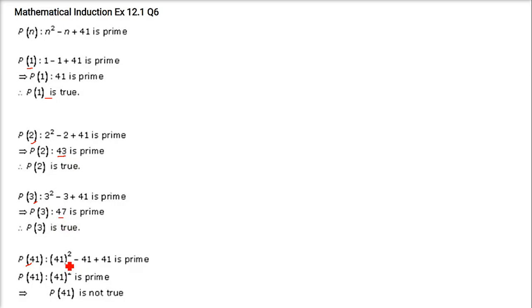But if you put 41, you get 41 square. This is not a prime. So P(41) is not true because this is not a prime. Anything which is square is never a prime.